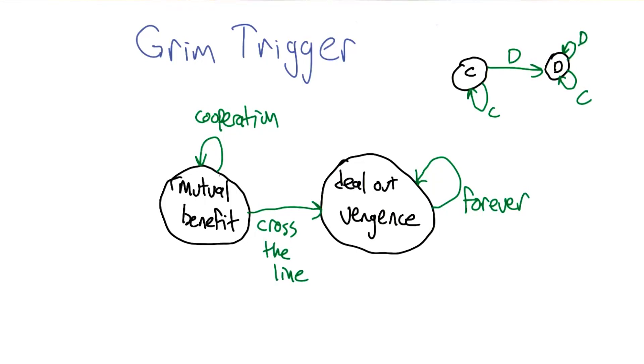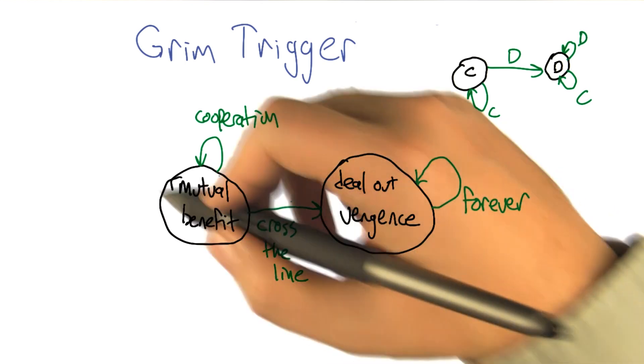So another way to think about the proof of the folk theorem is you could prove it with a little strategy that is referred to as grim trigger. I like that. I like the way it sounds. So here's the basic structure of grim trigger.